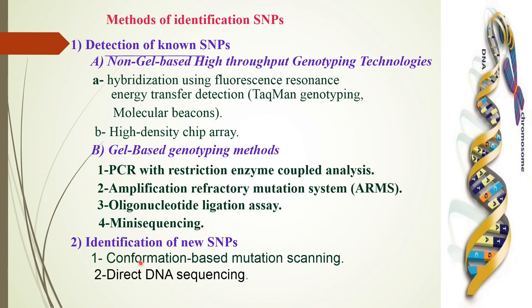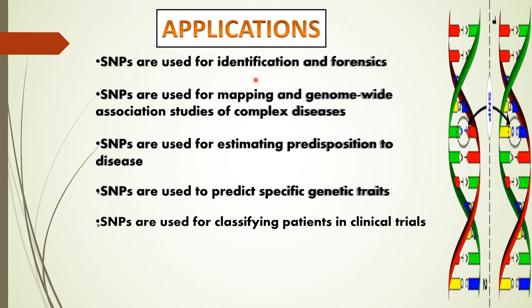Applications of SNPs: SNPs are used for identification and forensics. They are also used for mapping and genome-wide association studies of complex diseases, for example cancer. SNPs are used for estimating predisposition to diseases, for predicting specific genetic traits, and for classifying patients in clinical trials.